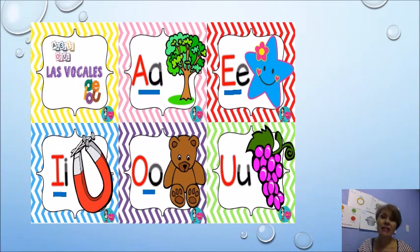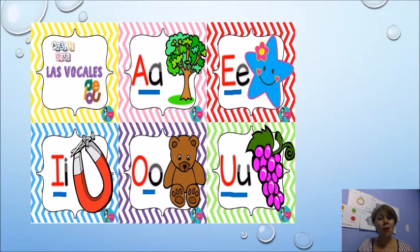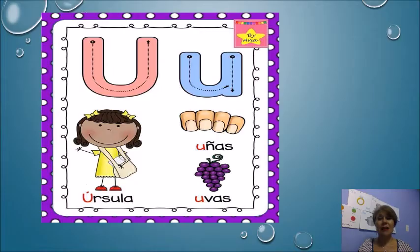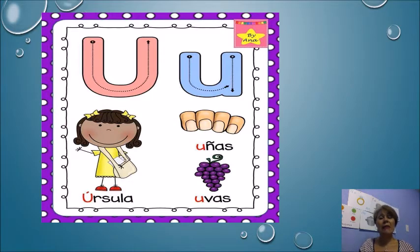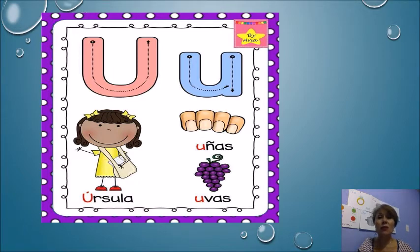Y por último, la que vamos a conocer hoy es la vocal U. ¿Cómo se llama esta vocal? U. ¿De qué? De uvas. ¿Cómo suena la vocal U? U. Muy bien chicos, todos repitiendo fuerte: U. Aquí les voy a presentar unas imágenes que empiezan con la vocal U. La vocal U mayúscula está de color rosa y la vocal U minúscula está de color azul. La U mayúscula es un poco más grande que la U minúscula.